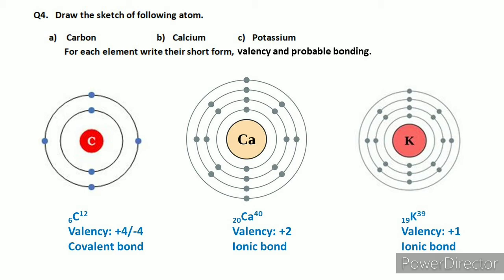We have to draw 20 electrons in calcium's shells. First shell: maximum 2 electrons — filled. Remaining: 18 electrons. Second shell: maximum 8 electrons — filled. Now we have used 10 electrons, with 10 remaining. Third shell: maximum 8 electrons — filled. That gives us first shell 2, second shell 8, third shell 8, totalling 18 electrons used. Two electrons remain, so we draw a fourth shell with two electrons. We have now drawn all 20 electrons of calcium across four shells in proper arrangement.